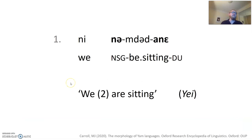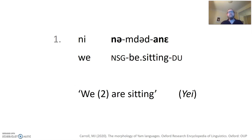To understand what I mean, here's a simple sentence taken from Ye, a YAM language of Southern New Guinea. 'Ni nemdodane' — 'we two are sitting.' We know that it's referring to precisely two people by virtue of the morphology of the verb here, 'nemdodane.'